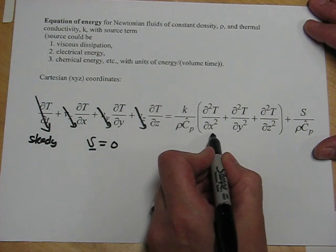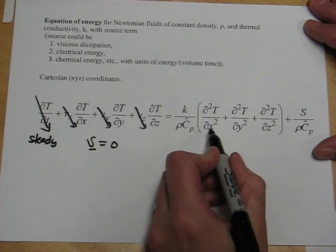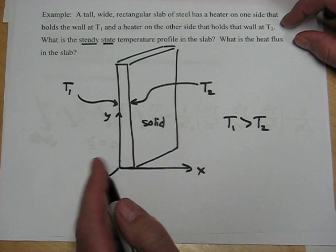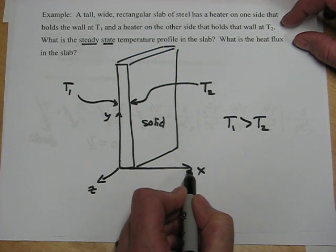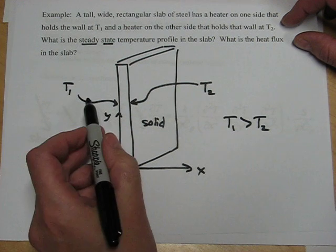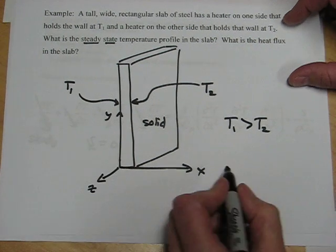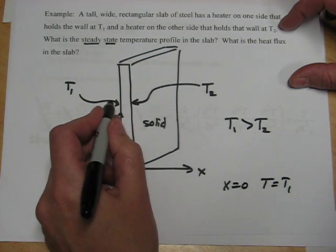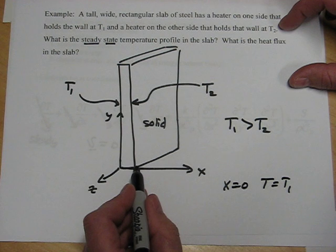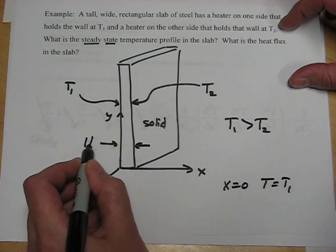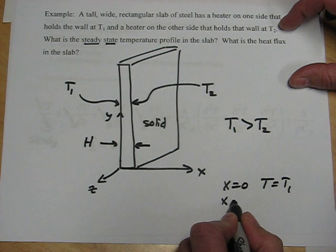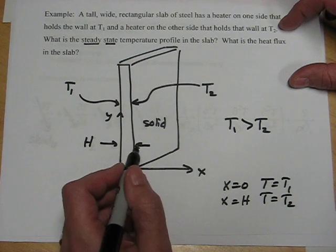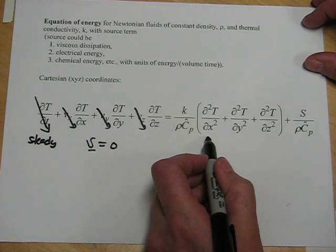The first term on the right hand side asks the question, does the temperature vary in the x direction? We chose the coordinate system. And we chose that the x direction was this direction through the thickness. And we know that when x equals zero, the temperature is equal to T1. That's one of our boundary conditions. And when x is equal to, say, h, the thickness of the slab, the temperature is equal to T2. So clearly the temperature does vary in the x direction. So this term definitely stays.